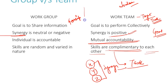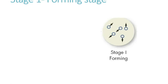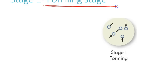This was all about the difference between a group and a team. Another important issue is the formation of a group — there are five stages through which a group is formed. Let's look at the first stage.